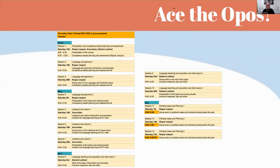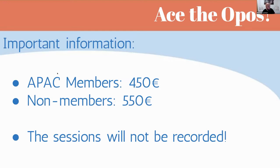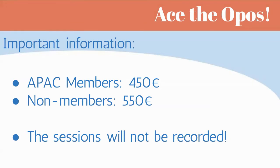I'm trying to run a bit quickly because time is limited. The important information: APAC members pay only €450 for a 50-plus hour training course — good value. Non-members pay €550. The membership is €42 — not €70, that was years ago — so it's really recommendable to sign up to APAC, become a member. It's a win-win: you become a member of the association and get a great discount. Also, something important that has been asked before: the sessions will not be recorded. If you miss a session, you'll receive the materials used, but you won't be able to see the session.